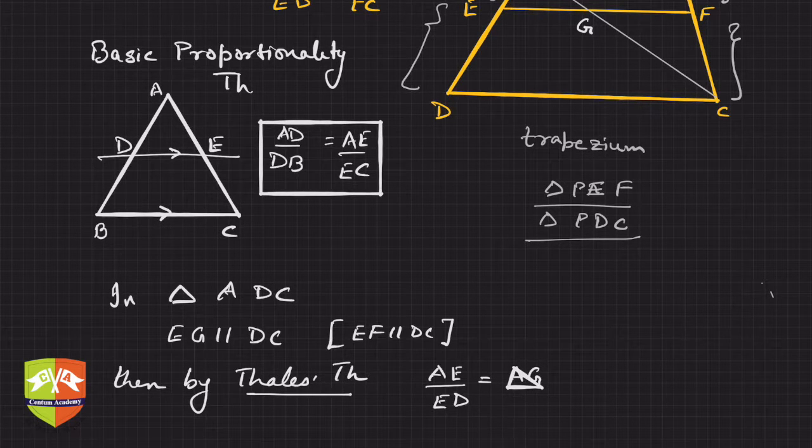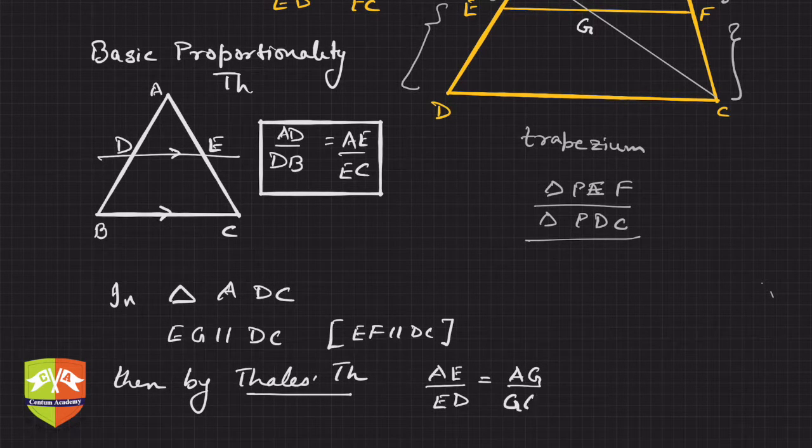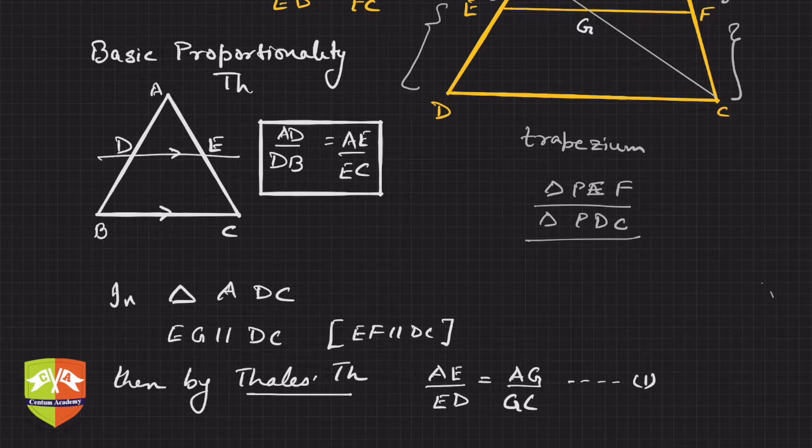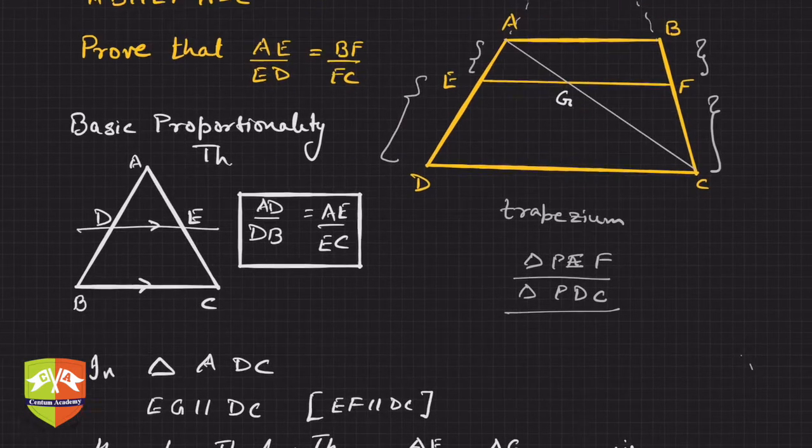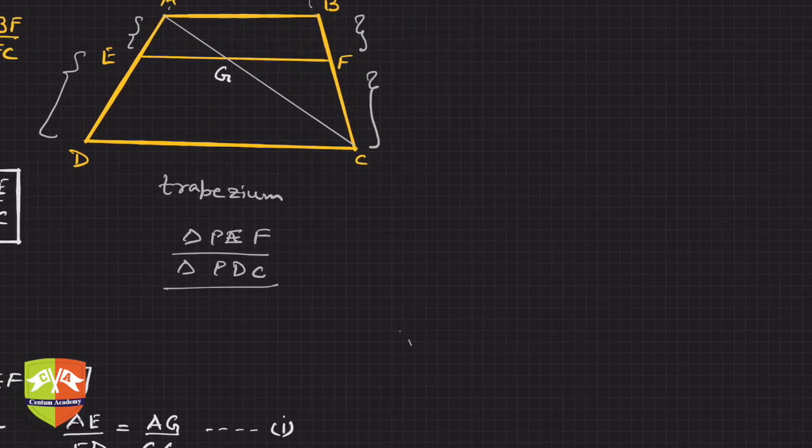by Thales' theorem what can I say? I can say AE upon ED is equal to AG upon GC. Let this relation be one.